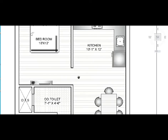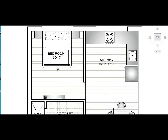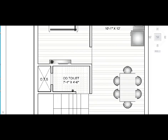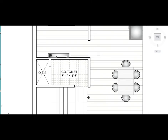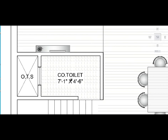Here is the bedroom size — the thermal space is around 10ft. Here we have given entry. We also have a common toilet which is below the stairs. The size of the common toilet is 7ft 1in by 4ft 6in.